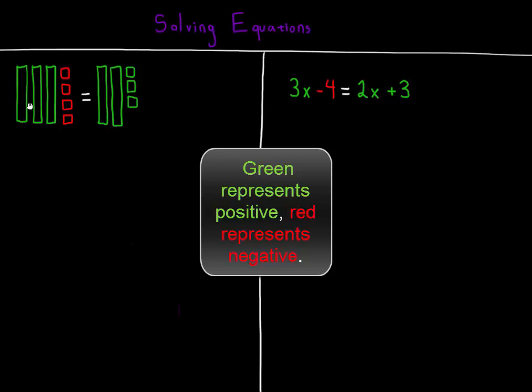You can see in the setup here, three green bars is 3x, four red squares is negative four units. On the other side, two green bars represents the 2x, and three green squares represents the plus three units.